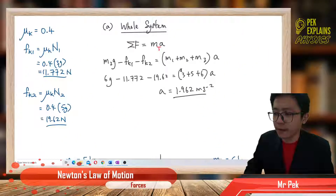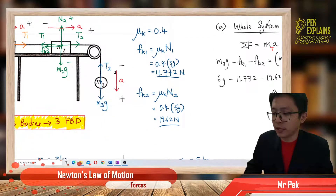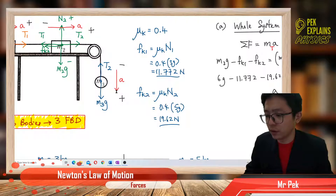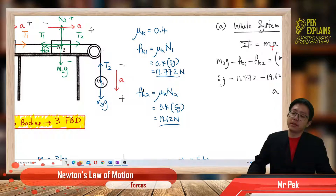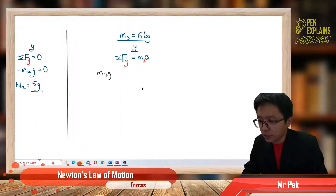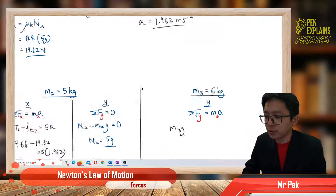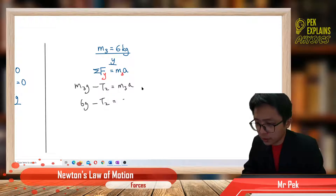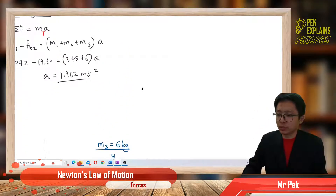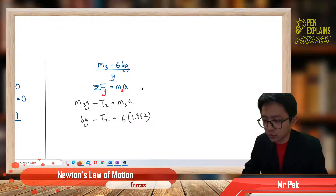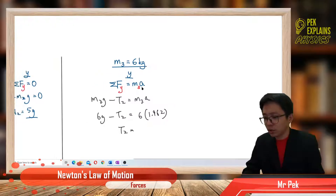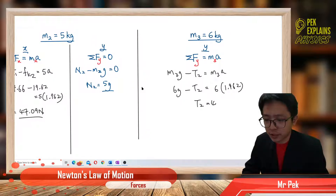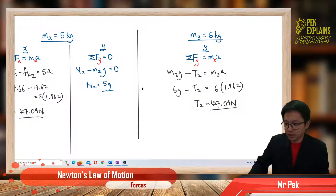Let me also write the final equation for mass 3, which is 6 kg. M3G is positive because it follows acceleration; tension 2 is negative because it opposes acceleration. So: 6G minus T2 equals 6 times 1.962, and substituting a equals 1.962 we also get T2 equals 47.09 N — the same answer, confirming our result.